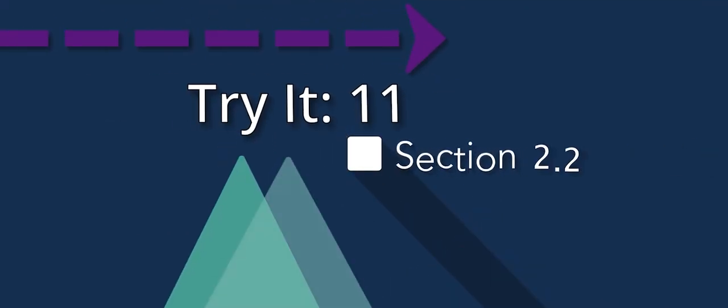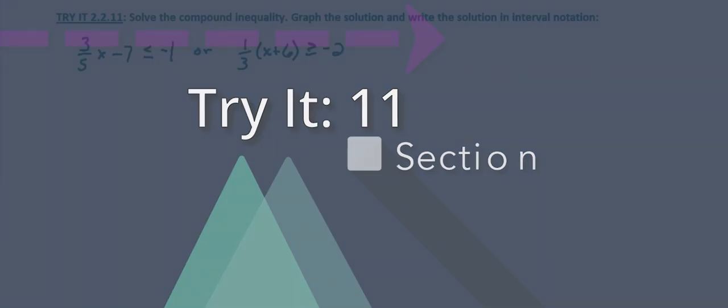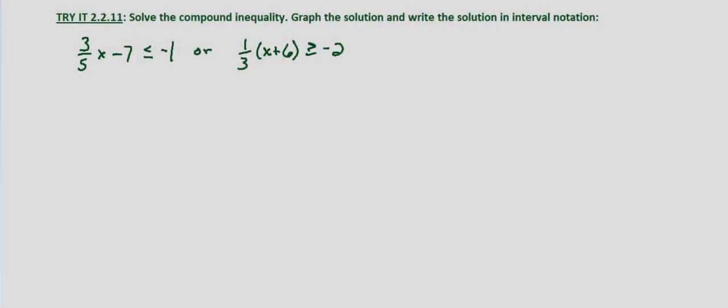So we're still looking at OR compound inequalities. The difference is that, just like with equations and with the AND inequalities, the process is the same, but the inequalities themselves become a little bit more complicated to simplify. The process, again, though, is exactly the same.